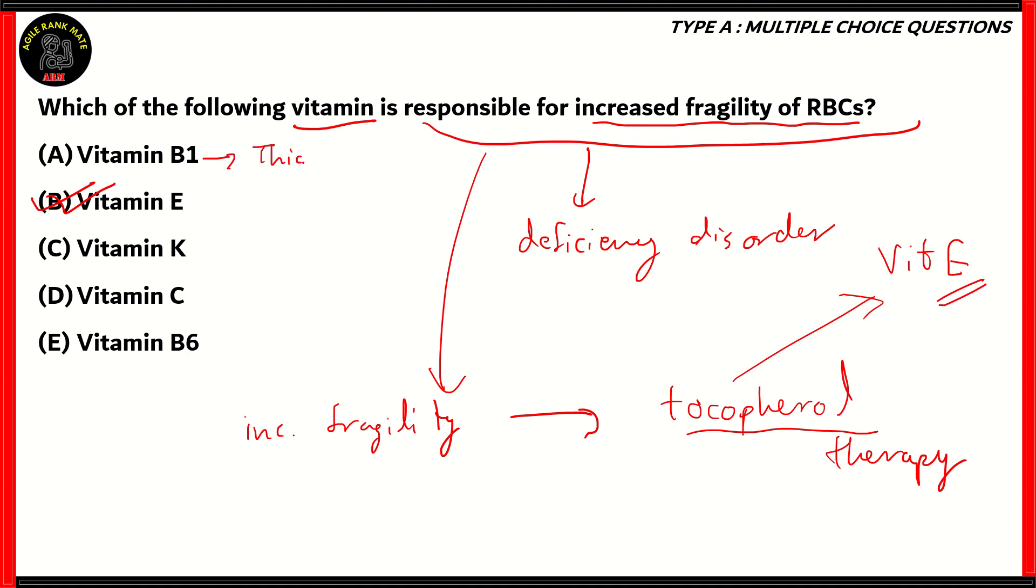Option A, B1 turns out to be thiamine, which is useful for goiter. Vitamin K, option C is phytonadion, which is especially helpful for hair loss and all that. Vitamin C is ascorbic acid, and its deficiency disorder is scurvy. So option D is also incorrect. Vitamin B6 is pyridoxin. So therefore, option E also turns out to be incorrect. The right option is option B, vitamin E, because RBCs when they have increased fragility, they're treated by tocopherol therapy, which makes sure that enough vitamin E is into the diet in order to reverse the disorder. So therefore, increased fragility is a deficiency disorder of vitamin E, which is tocopherol.